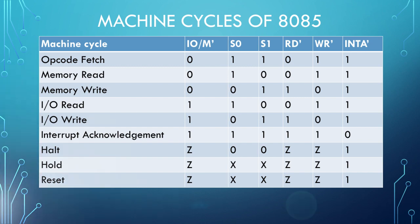Here X and Z — Z is for high impedance state and X is unspecified. So for hold and reset condition, we have these values for different control signals.